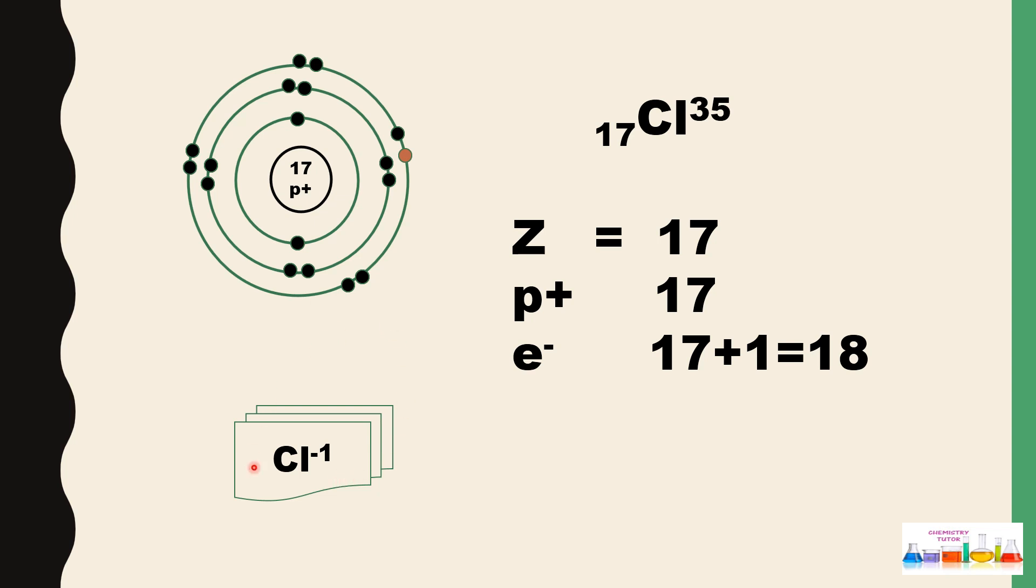So this is the formation of anion. You can apply the same for -2 charges and -3 charges. It depends upon the number of electrons an element will gain.